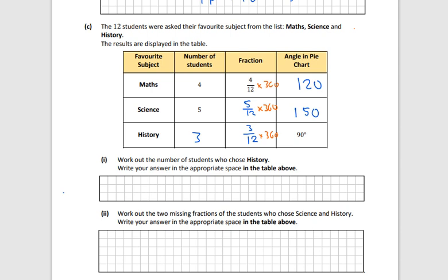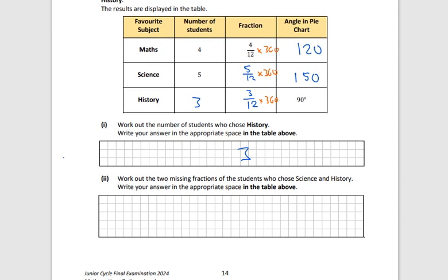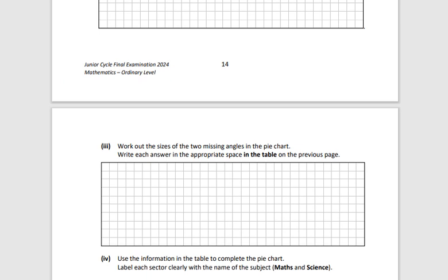Work out the number of students who chose history. I've done that already. That's 3. Work out the two missing fractions. I've done that already as well. Work out the size of the two missing angles. Write the answers in the appropriate. I've done that as well.